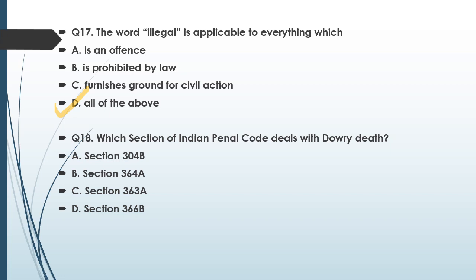Question number eighteen: Which section of the Indian Penal Code deals with dowry death? Options are section 304B, section 364A, section 363A, and section 366B. Section 304B of the Indian Penal Code deals with dowry death. Option A is the correct answer — the provision related to dowry death is given under section 304B of the IPC.